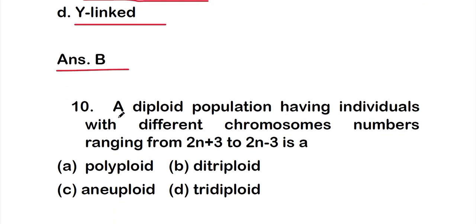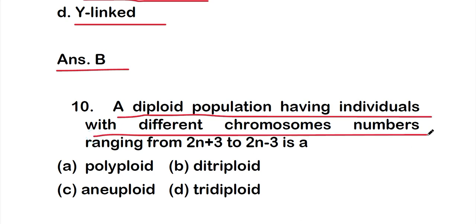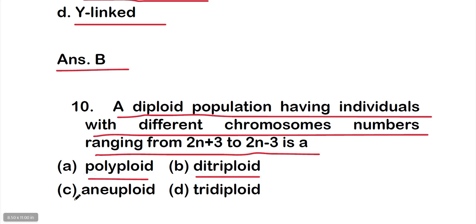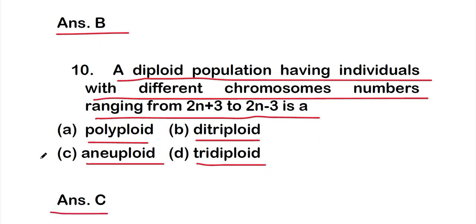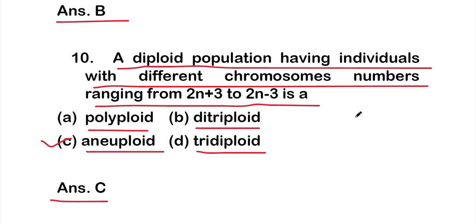Question ten: a diploid population having individuals with different chromosome numbers ranging from 2n+3 to 2n−3 is — option A: polyploid, option B: triploid, option C: aneuploid, or option D: tridiploid. The right answer is option C, aneuploid.